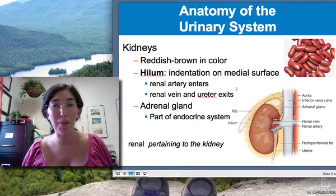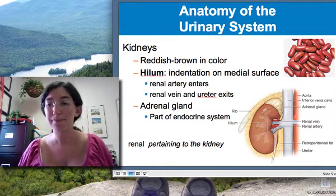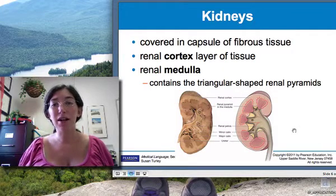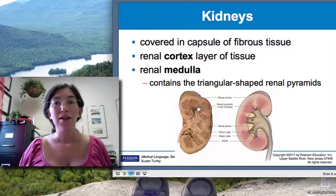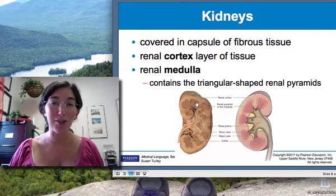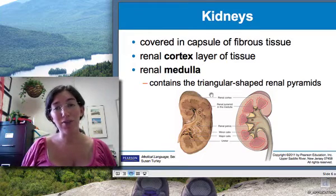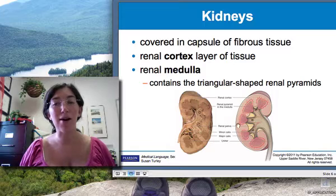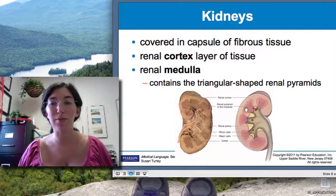Adrenal literally means on top of the kidney — renal, or reno, is a combining form for kidney, so renal means pertaining to the kidney. The kidney is covered in a tough capsule, and its tissue layers can be divided into two layers: the cortex and the medulla. Similar to neurology, the cortex is the outermost layer of tissue, and the medulla is the inner layer. The medulla is where you find the renal pyramids, and that is where the nephrons lie.